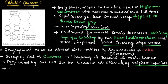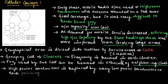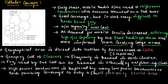To obtain frequency reuse, the high power transmitter is replaced by many low power transmitters. Each low power transmitter provides coverage to only a small portion of the service area. So instead of using a high power transmitter covering a large area, small cells are used with low power transmitters so that frequency reuse can be obtained, which increases network capacity.